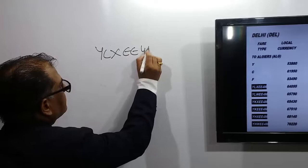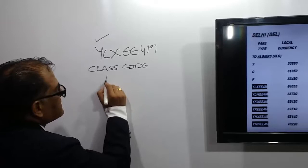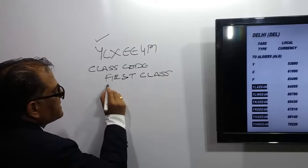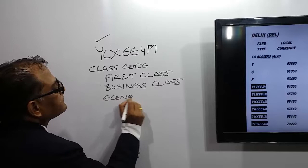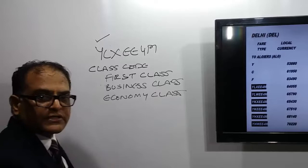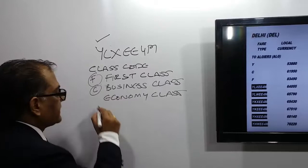The very first digit stands for the class code. In the airline industry we have three classes: first class, business class, and economy class. For first class we generally use the code F, for business class we use the code C, and for economy class we generally use the code Y.